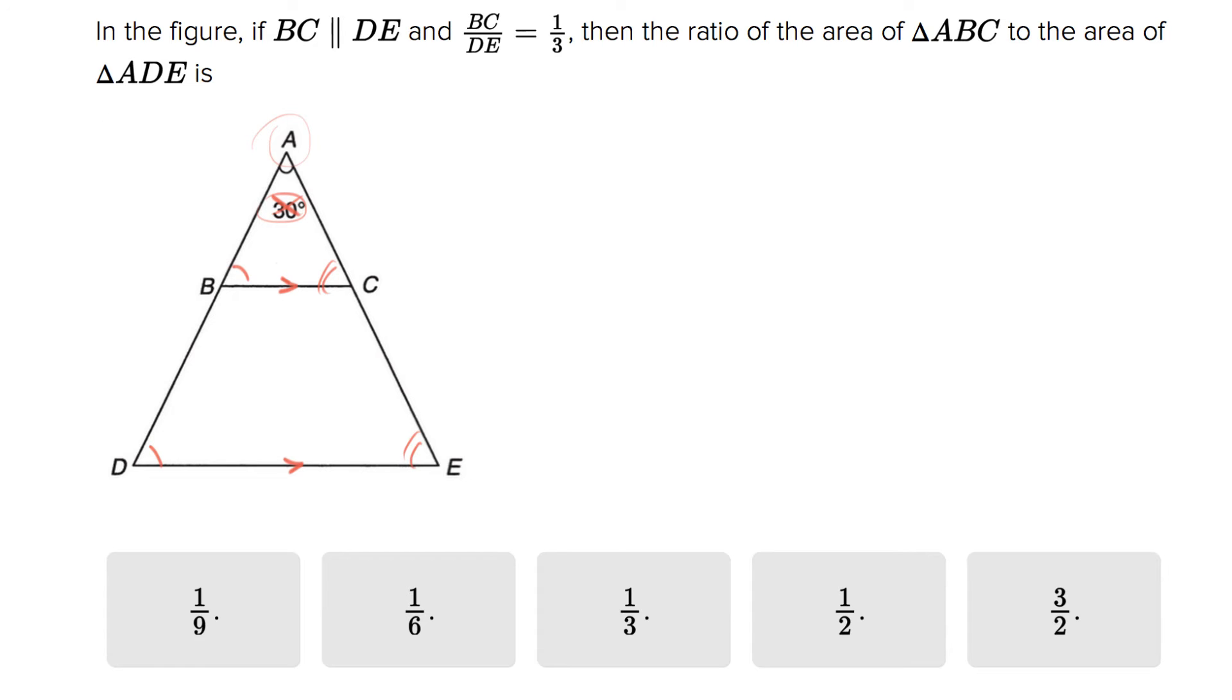They tell us the ratio of sides is one to three. They don't tell you the length, they tell you the ratio of sides is one to three. And they say what's the ratio of the area?